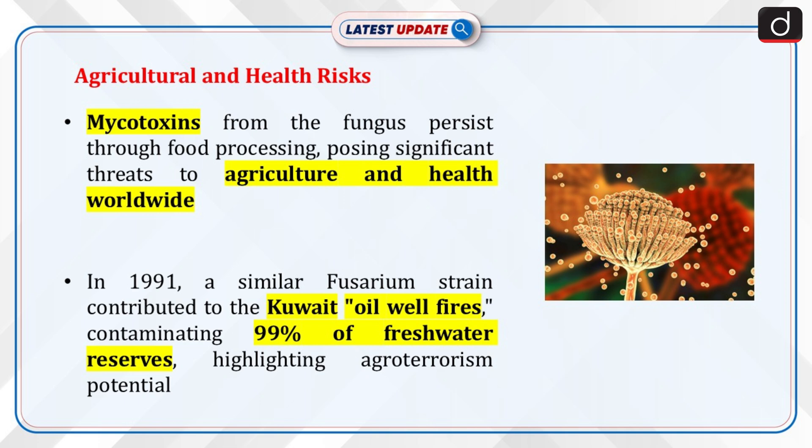The fungus's mycotoxins persist through food processing, making it a major threat to agricultural and health systems worldwide. In 1991, a similar Fusarium strain was linked to Kuwait's oil well fires, which contaminated 99% of the freshwater reserves, exemplifying the potential for large-scale agro-terrorism.